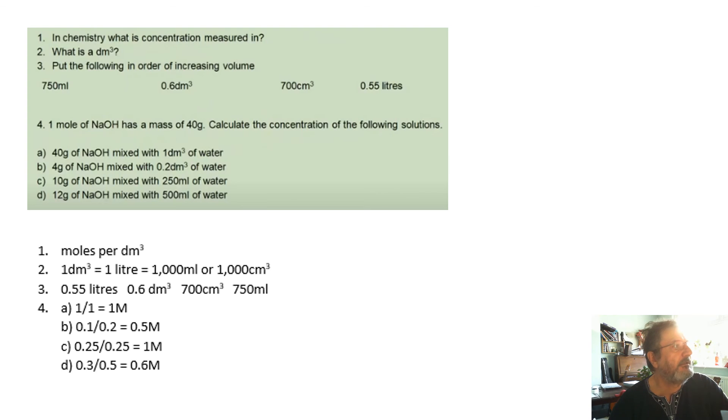Concentration is measured in moles per decimeter cubed. One decimeter cubed is a liter or a thousand milliliters or a thousand centimeters cubed. It's that volume.